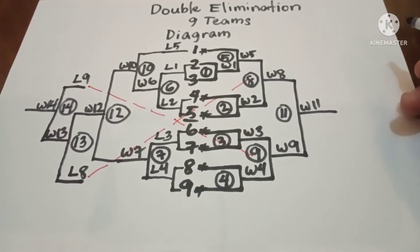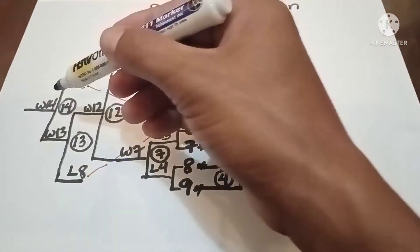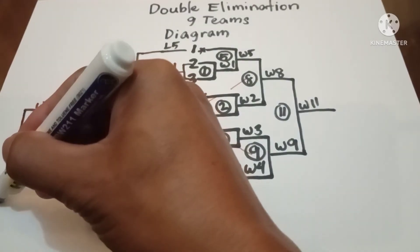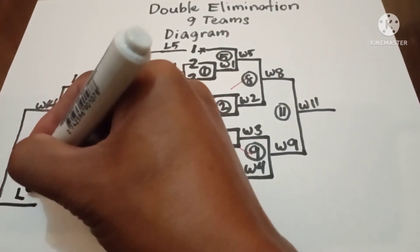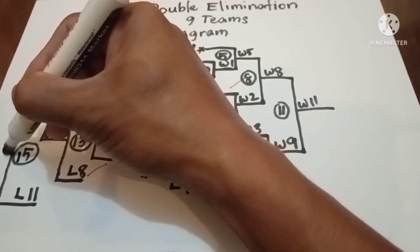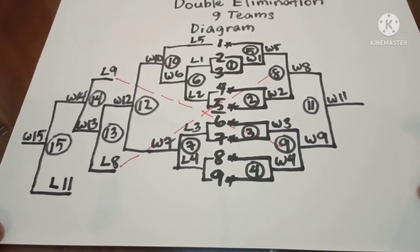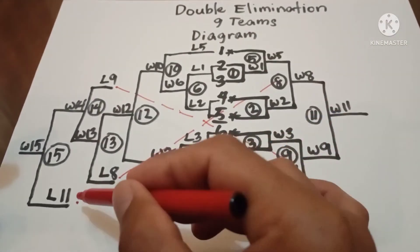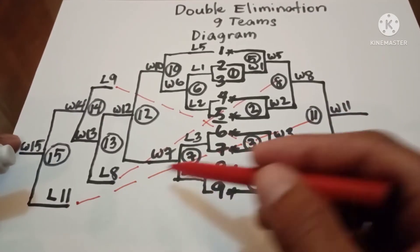Our next concern is Loser 11. Loser 11 plays against Winner 14 in Game 15. Don't forget to write the broken line indicating Loser 11 from Game 11.